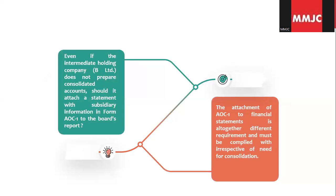But even if the intermediate holding company — that is B Limited in your example — does not prepare consolidated financial statements, it is still required to attach a statement giving details of subsidiaries and associates in its financial statements, right? Yes, that is correct. The attachment of AOC-1 to the financial statements is altogether a different requirement from consolidation.